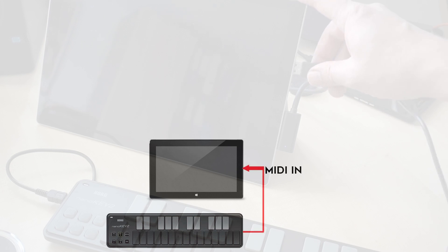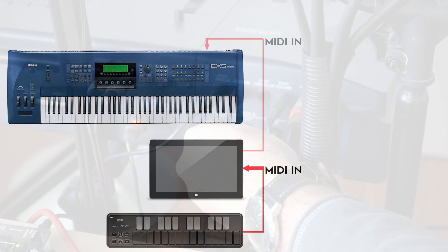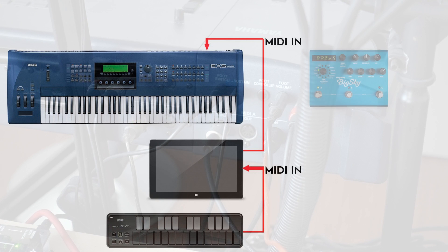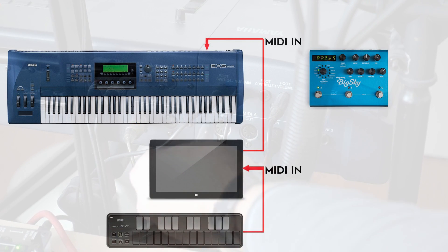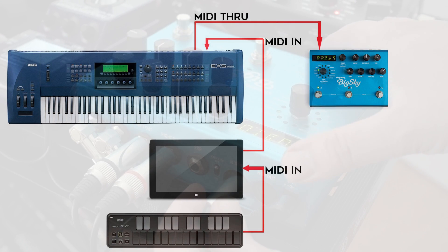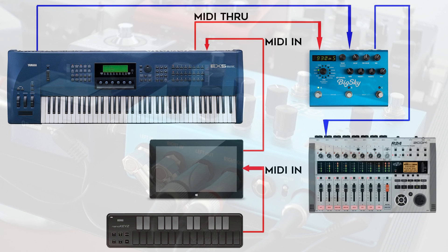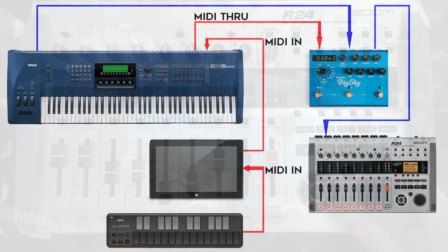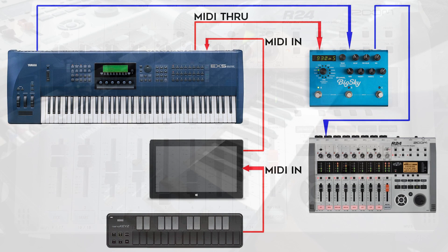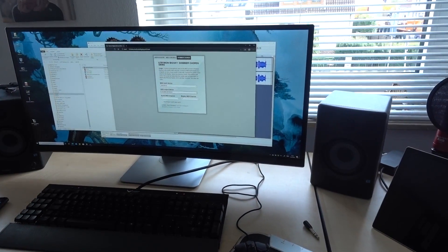Knowing this, we can now build a setup. First, connect your MIDI keyboard to your computer. Connect your computer's MIDI out to your synthesizer's MIDI in. Then connect your synthesizer's MIDI through — or if it doesn't have one, its MIDI out — to the Big Sky's MIDI in. Now connect your synth's audio out to the Big Sky's audio in, and the Big Sky's audio out to your audio interface's audio in. Also, set up your synth to receive MIDI signals only on channel 1. If you're not sure how to do that, look at your synthesizer's manual.